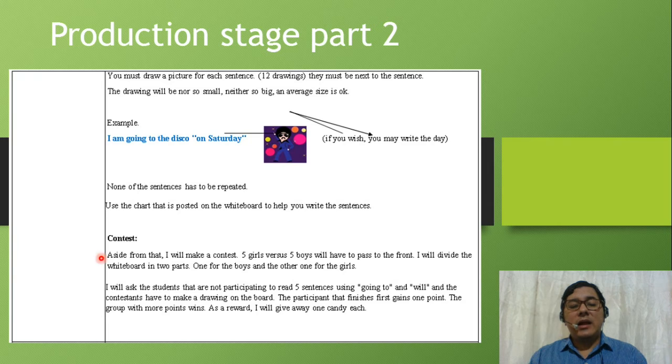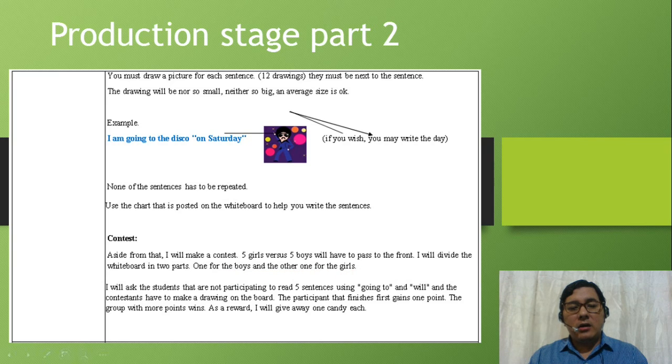I will make a contest. Five girls versus five boys will have to pass to the front. I will divide the whiteboard into two parts: one for the boys and the other one for the girls. I will ask the students that are not participating to read five sentences using going to and will, and the contestants have to make a drawing on the board. The participants that finish first gain one point. The group with more points wins. As a reward, I will give away one candy each. The time for this activity is 23 minutes.